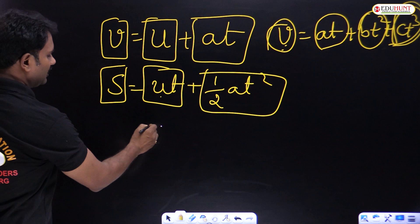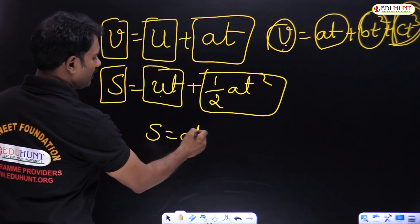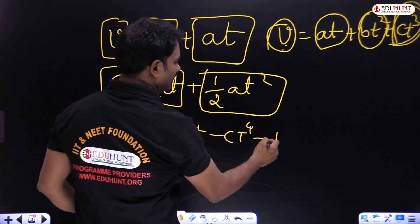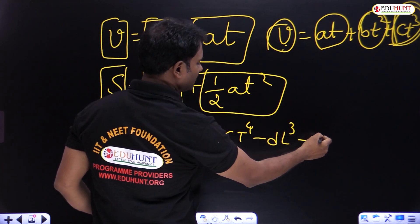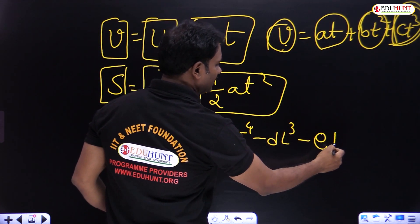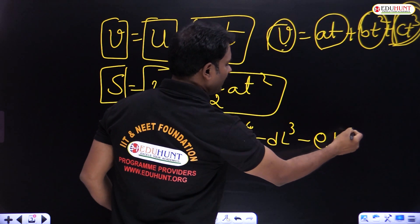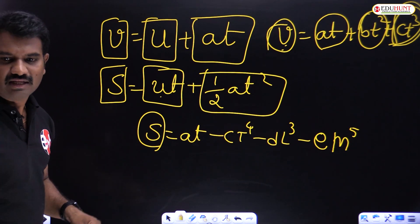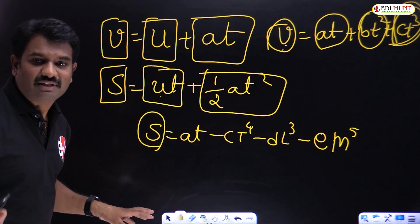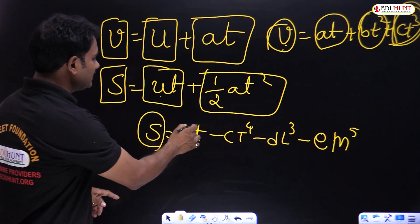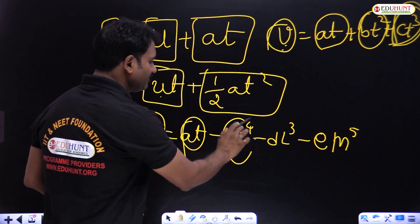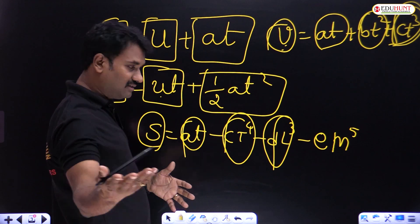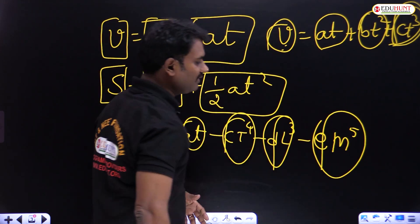For another example, if s equals at minus ct to the power 4 minus dl cubed minus em to the power 5, where s is displacement, then 'at' is displacement, 'ct to the power 4' is displacement, 'dl cubed' is displacement, and 'em to the power 5' is also displacement.